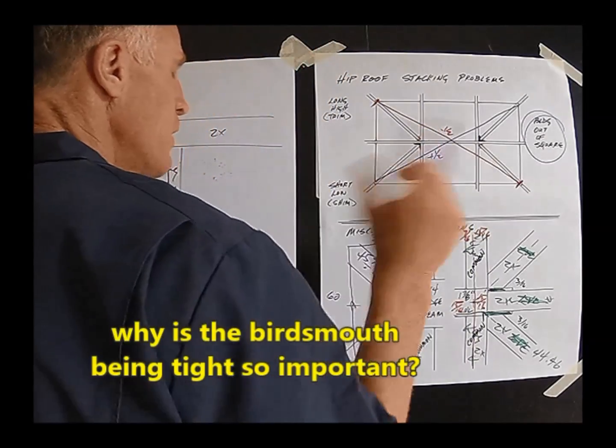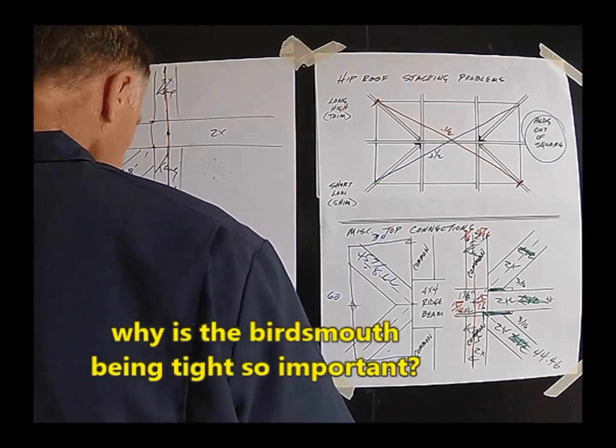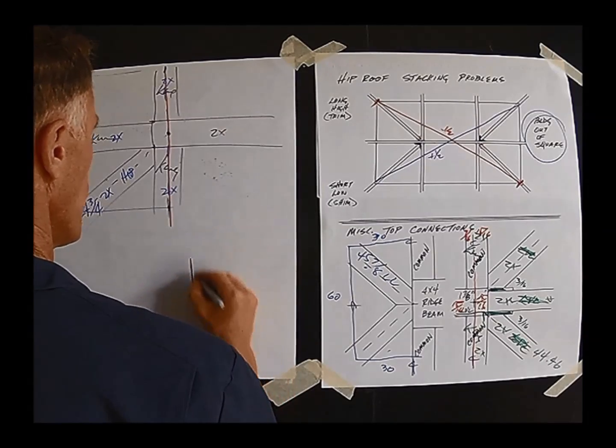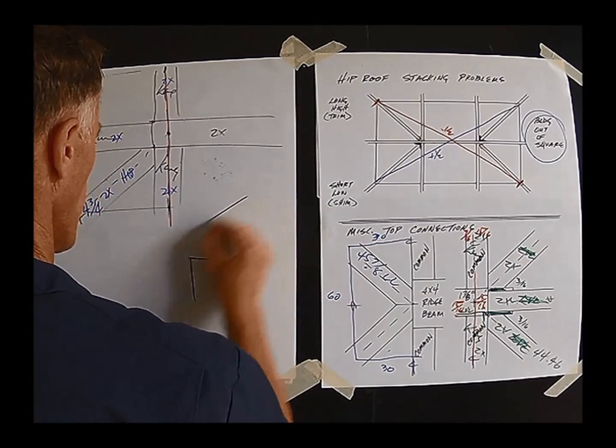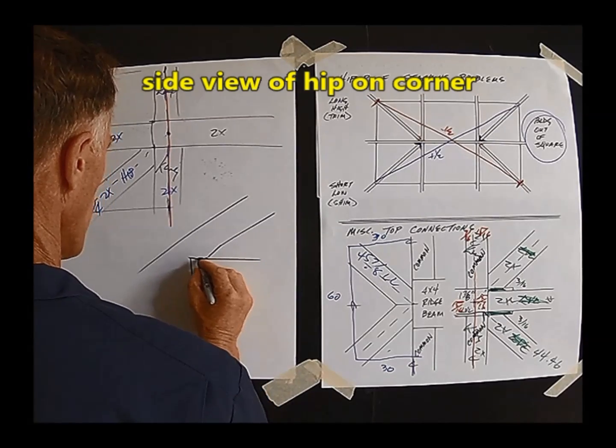Now why is that bird's mouth tight? I forgot to mention we were out talking about stacking the gable roof. Anytime you move, everything has been calculated. There's a corner of the building, here's the hip roof, there's the hip rafter coming down.